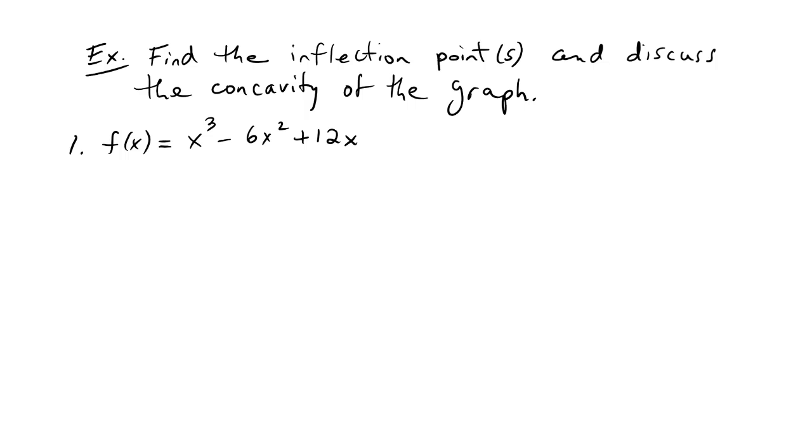So we start with the original function. We're going to need to look at the second derivative. I have to go through the first derivative. So that would be 3x² - 12x + 12.